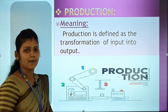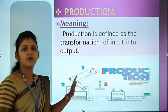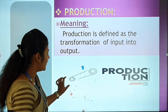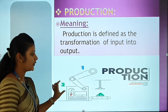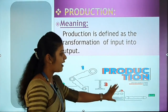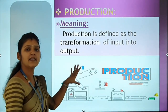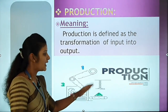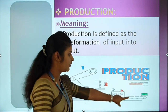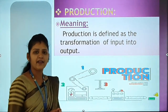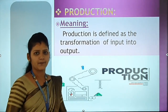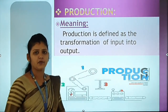Now look at this diagram, which will help you understand the meaning of production. Here there is an input. The input enters the machinery, and this is the production process. After all the production processes finish, we finally get the final product, also called the finished product. This is what production is.